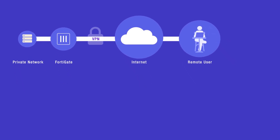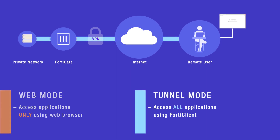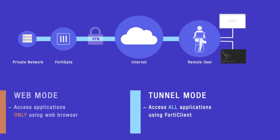We are going to look at two different SSL VPN scenarios. SSL VPN web mode allows remote users to securely access all applications in a web browser. The limitation of the web-based mode is that the remote user can only access browser-based applications. SSL VPN tunnel mode allows remote users to securely access web browser and non-web browser-based applications in a private network.